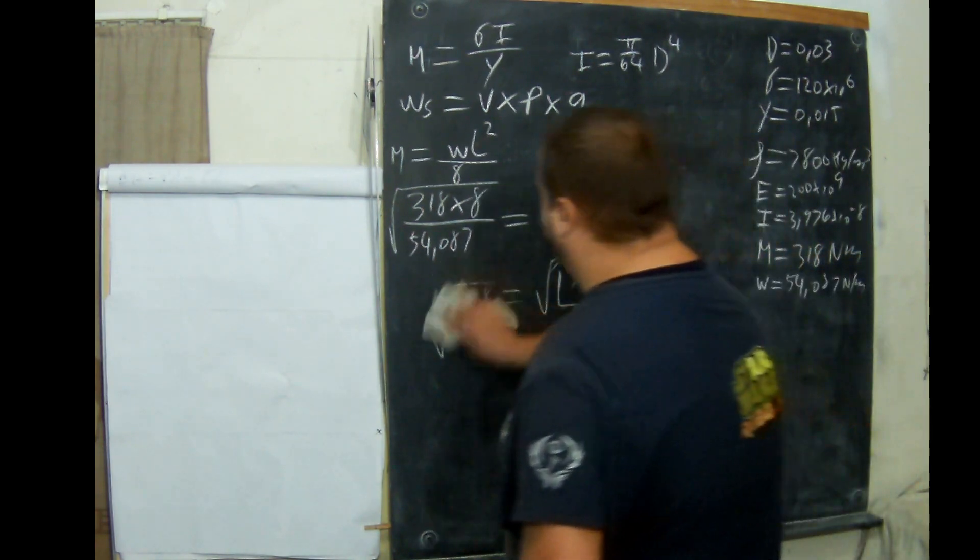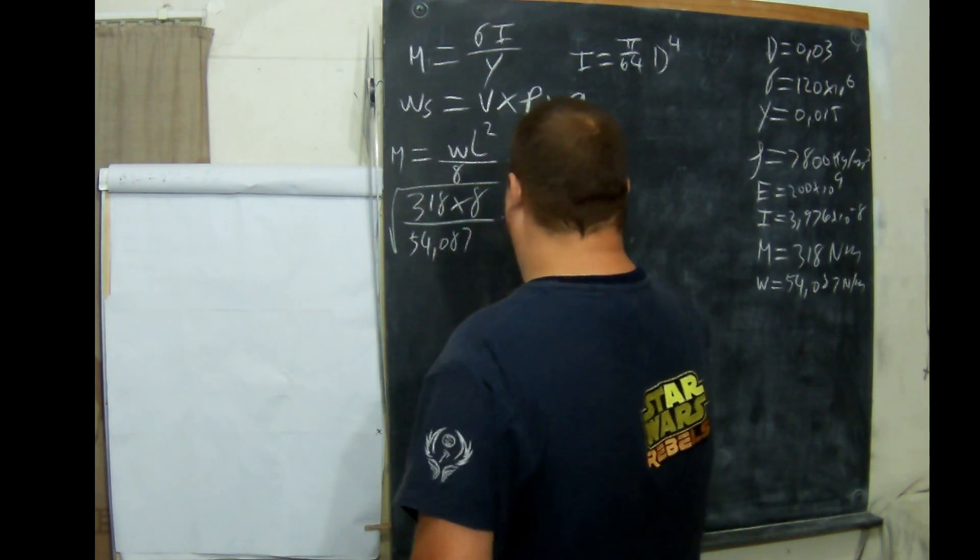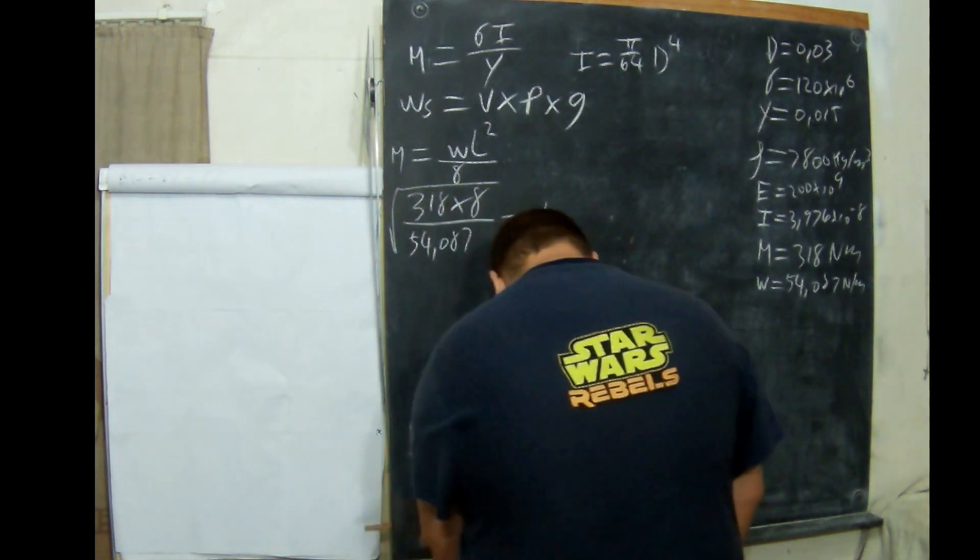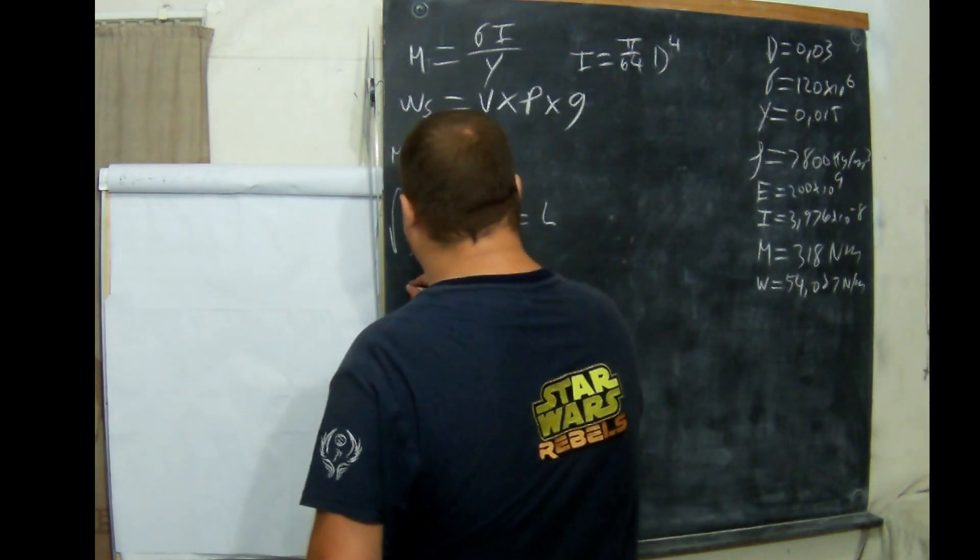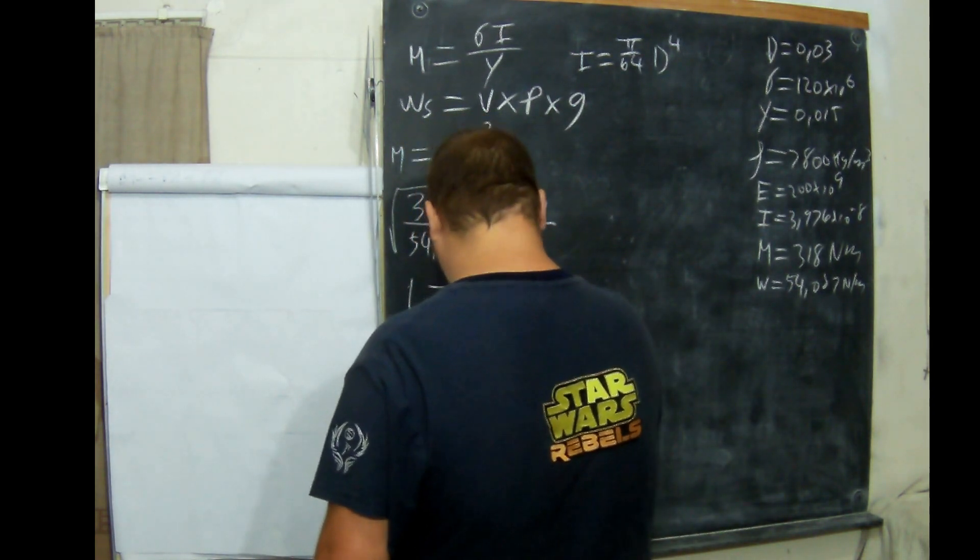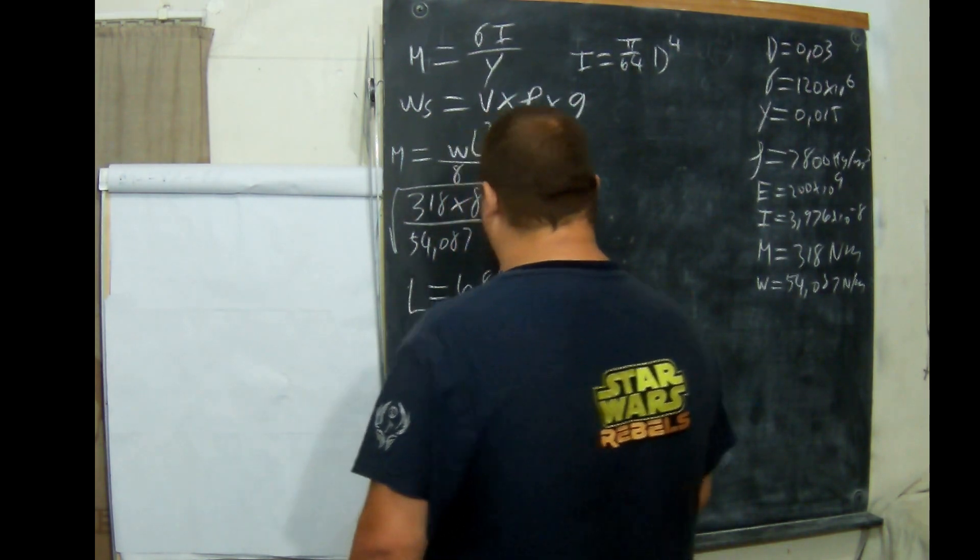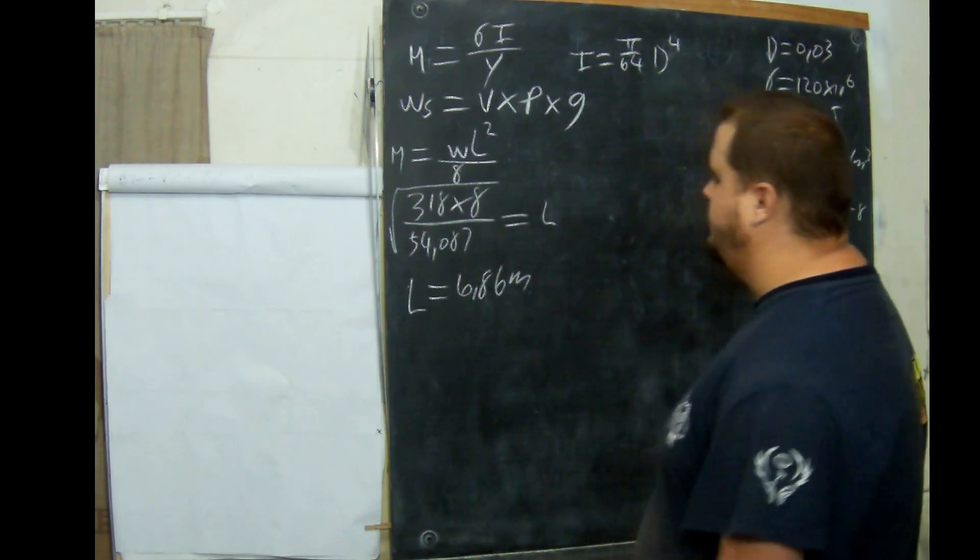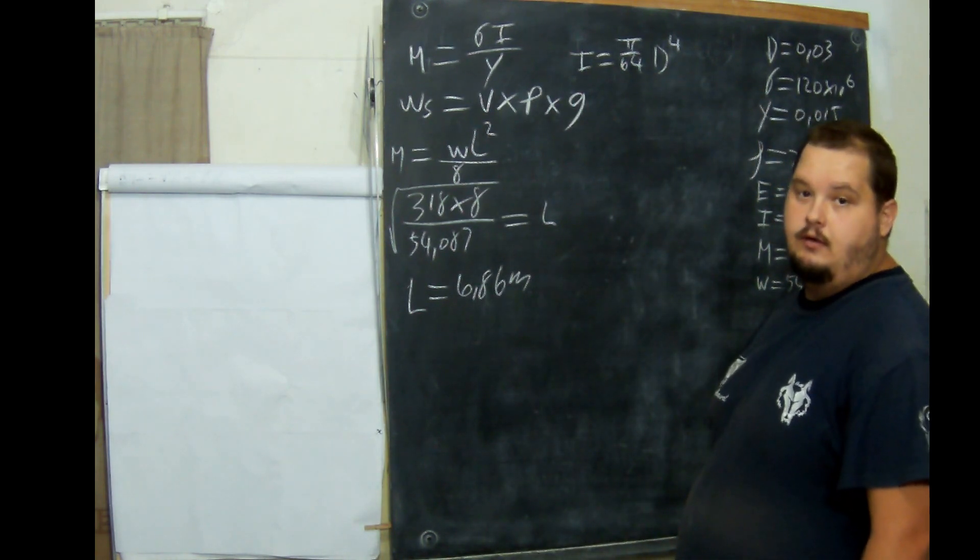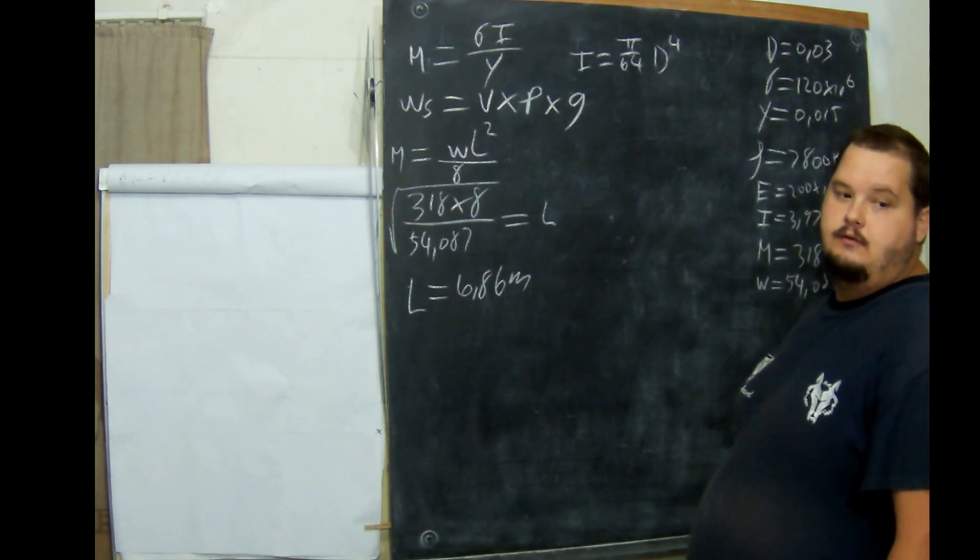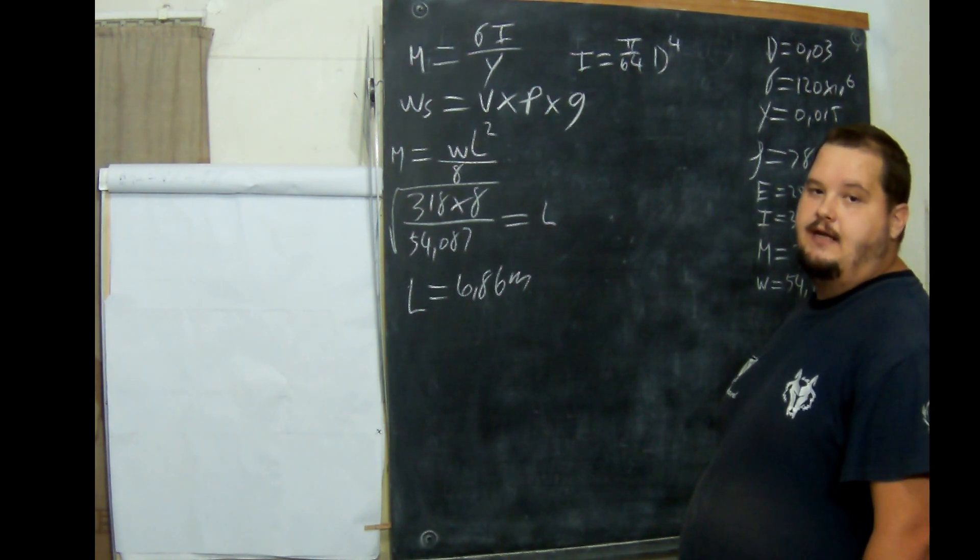Never go forward without explaining. So L is equal to 6.86 meters. Now this is not the true value because we have not taken deflection into account. Our deflection has not been taken into account.